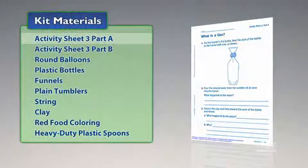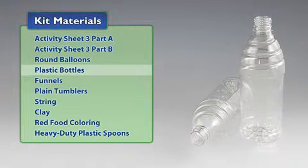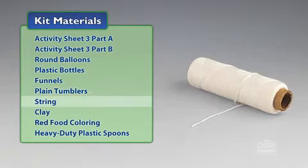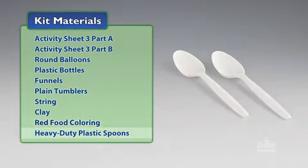You will need the following materials from the kit: activity sheet three part A, part B, round balloons, plastic bottles, funnels, plain tumblers, roll of string, clay, bottle of red food coloring, and heavy duty plastic spoon.